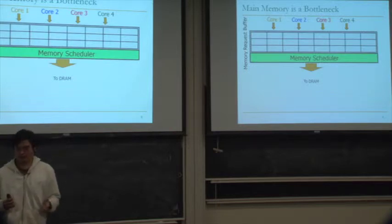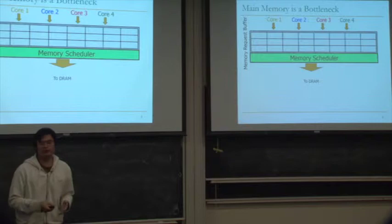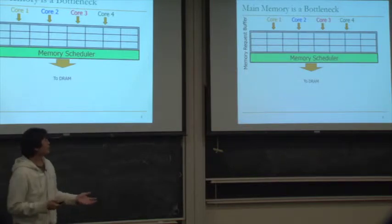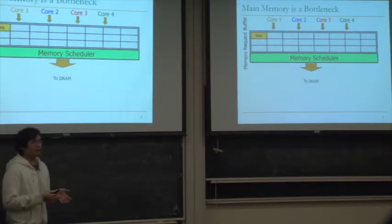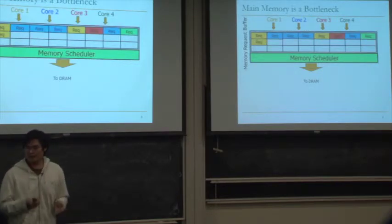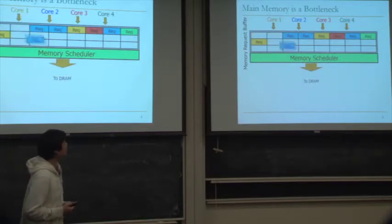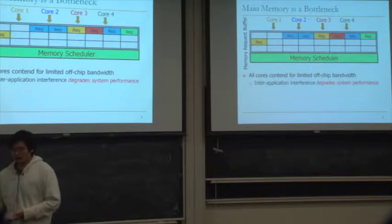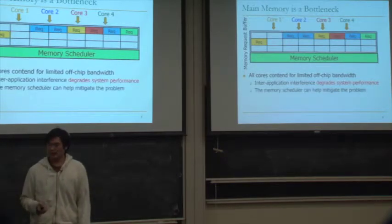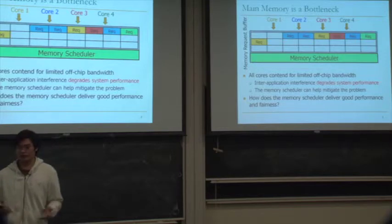In chip multiprocessor systems, you have multiple cores that interact with DRAM by sending requests to the memory controller, which consists of memory request buffers and the memory scheduler. When a core generates a request to DRAM, the memory request buffer stores requests from different cores, and the memory scheduler selects one of these requests to get the data back to the core. When you have multiple cores, they all contend for the limited off-chip bandwidth, and this interference can degrade system performance.